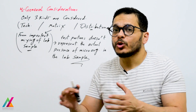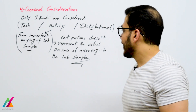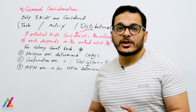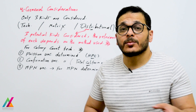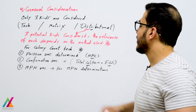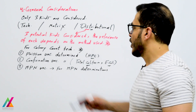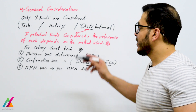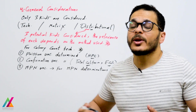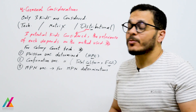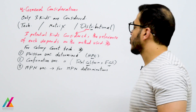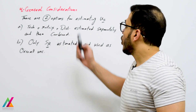Matrix uncertainty arises from imperfect mixing of the lab sample — test portions taken from it will not have the same results and may not represent the actual presence of microorganisms. Distributional uncertainty refers to the random distribution of microorganisms in the test sample and subsequent dilutions, even for homogeneous material. Three types of distributional uncertainty are considered: Poisson uncertainty (e.g., for heterotrophic plate count), confirmation uncertainty (e.g., for total coliform and E. coli requiring confirmation), and most probable number uncertainty for MPN determinations.